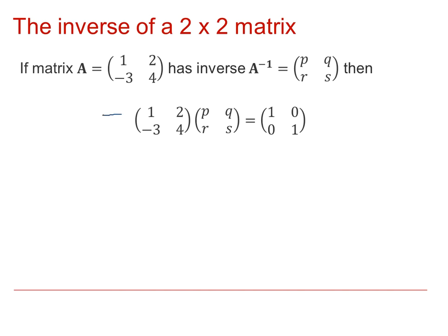If we look at the left-hand side, I can multiply out in the usual way the first row by the first column, so that we get P plus 2R, and that must be equal to 1, which is the first element in the identity matrix. If we now look at the second row multiplied by the first column, you can see that we get -3P plus 4R, and that must be equal to 0. So, there we've got a pair of simultaneous equations that we can solve for P and R.